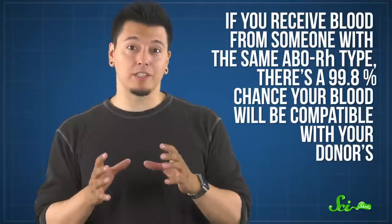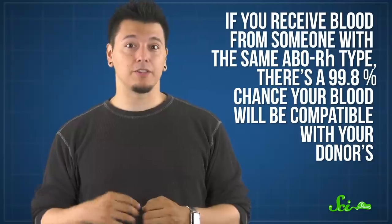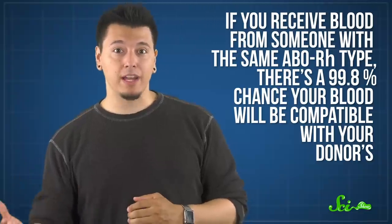The good news is that despite all the potential blood types you could have, for the most part, the ABO+Rh blood typing we're using does a pretty good job of matching people's blood. With this system, if you receive blood from someone with the same ABO+Rh type, there's a 99.8% chance your blood will be compatible with your donor's. For some reason, your body's immune system doesn't go after every antigen equally, so you don't usually need to know what version of every single known antigen you have.